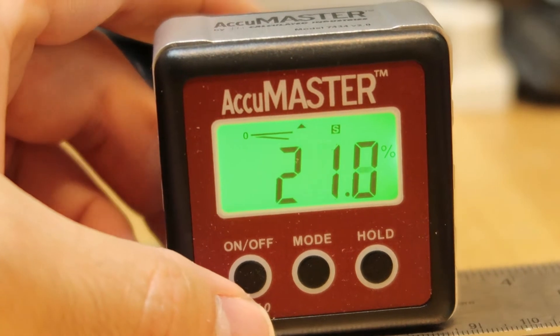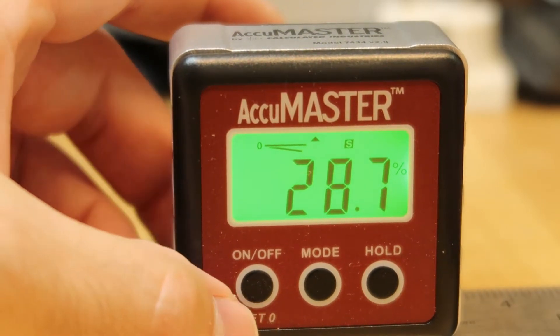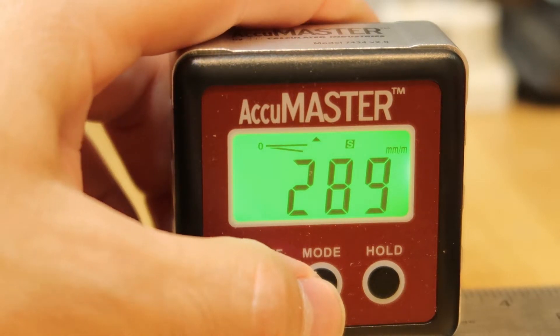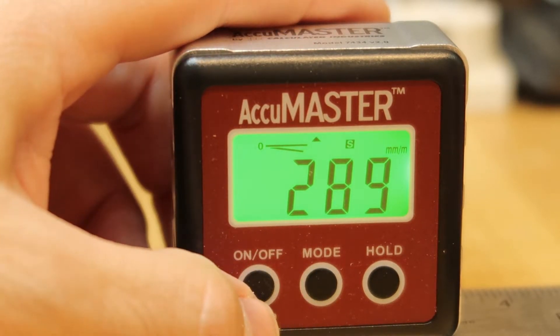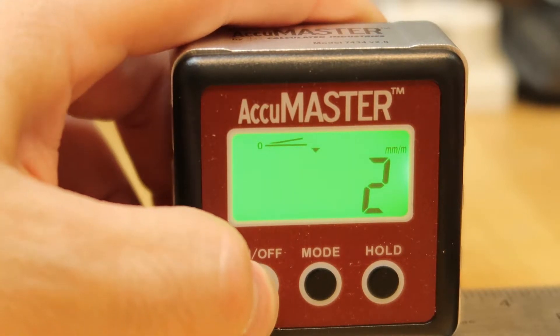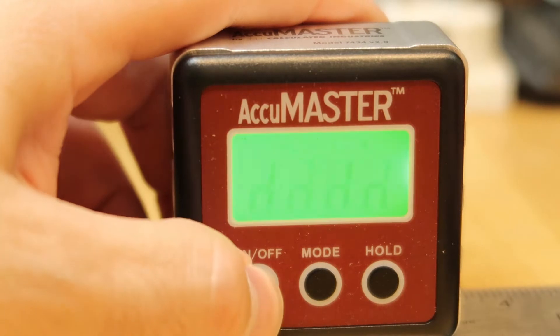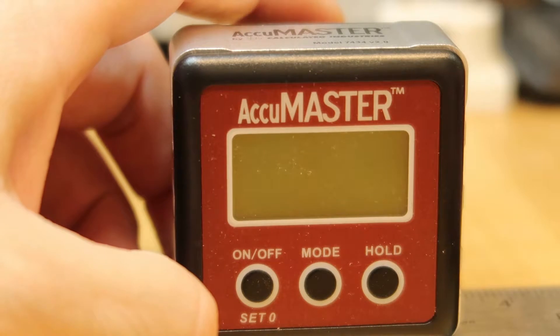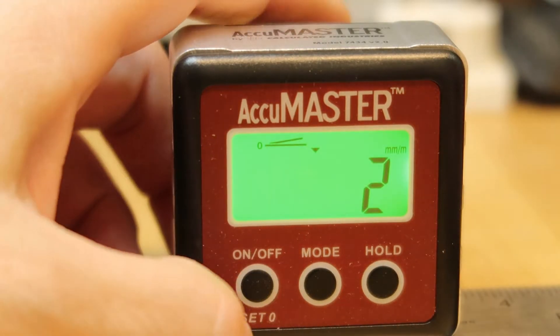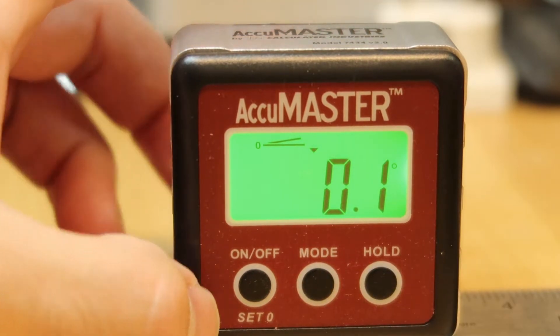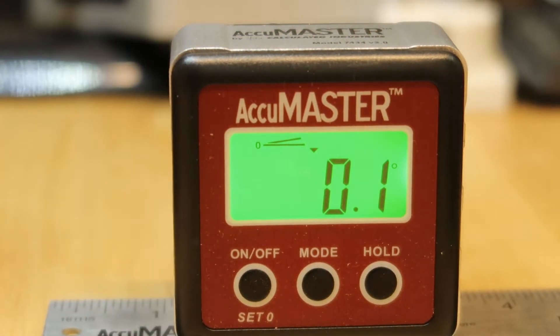Okay, so we have the degrees, we have percent also changing by the mode, and we have 5 millimeter per meter. By the way, let me show you how it works. So if I turn it off and then on again, I will change the mode to degrees, and now if I change to percent.